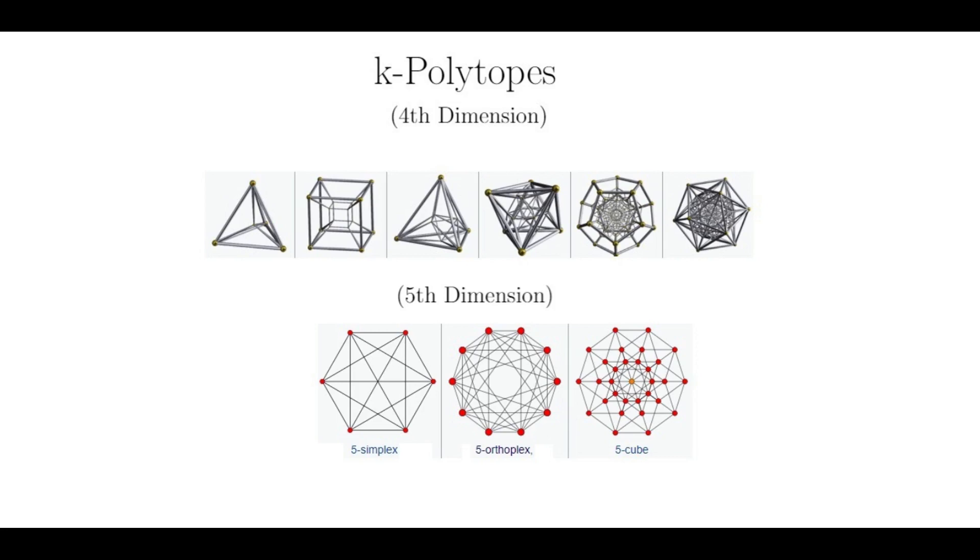So in the fourth dimension there are actually six regular polytopes that you can see here. Actually, you are seeing projections of them, since I can't show them in 4D on your screen. Below them are diagrams of the three regular five polytopes. And from the fifth dimension onward, there are in fact always only three regular polytopes.